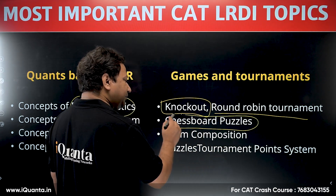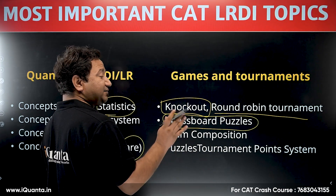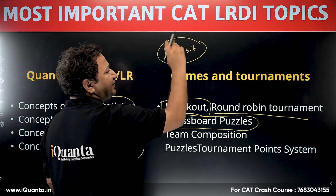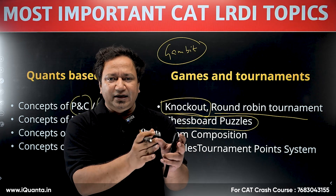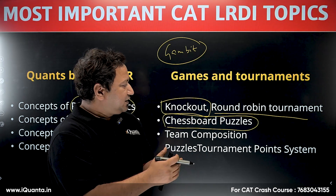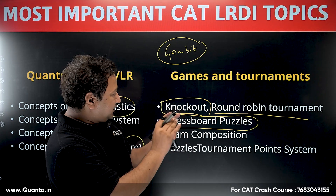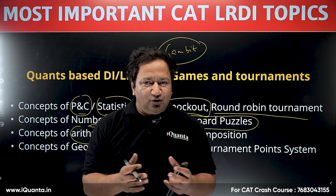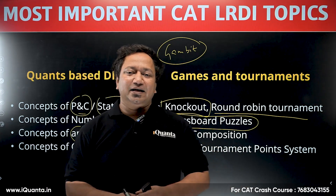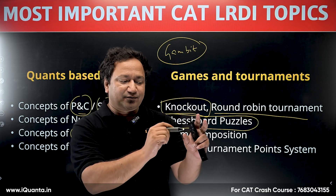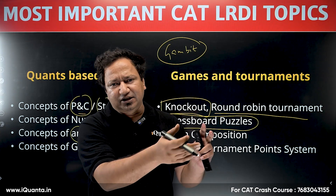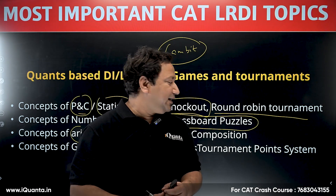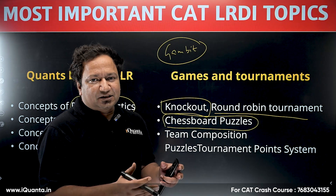Chessboard puzzles rarely appear but do come up. A gambit involves the arrangement and movement of pawns, queens, kings, and bishops. You might think you need to know how to play chess, but the puzzle will provide all directions on how each piece moves and what conditions apply, so there's no need to learn chess to solve these.